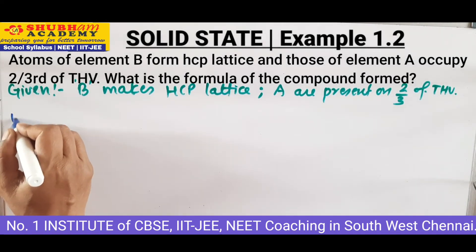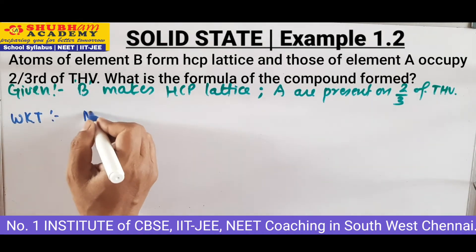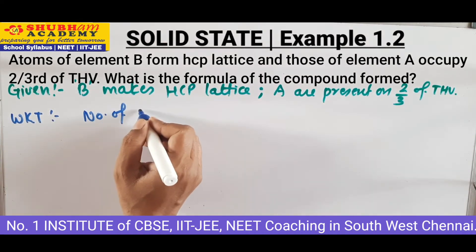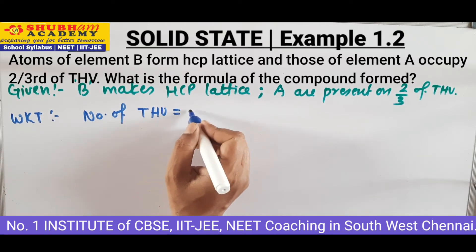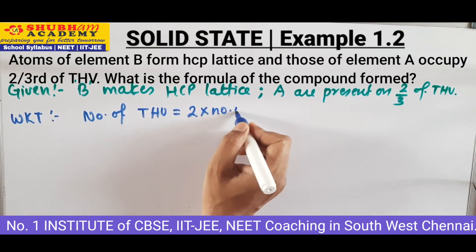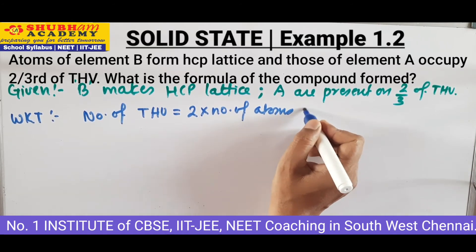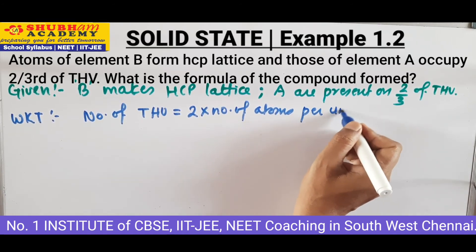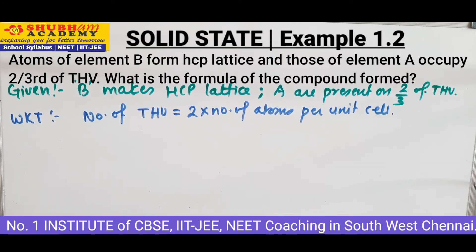Now moving on to Example 1.2. We know that the number of tetrahedral voids is equal to 2 into the number of atoms per unit cell. Now we will see the solution part.